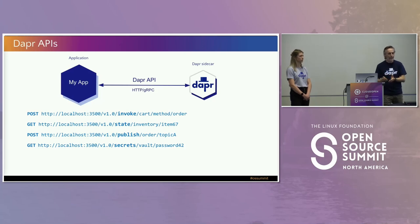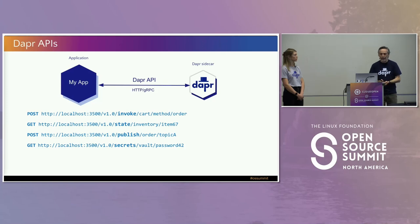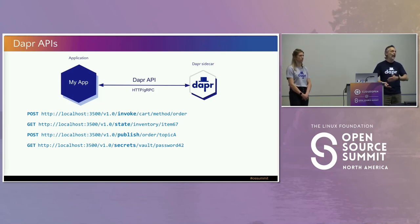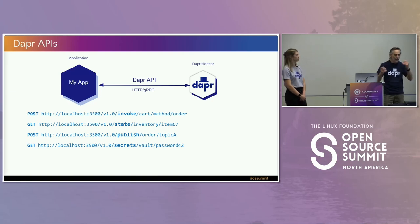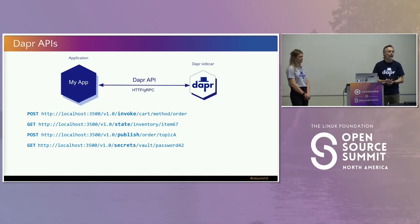You simply call an API. Say you wanted to call the order method on the cart application wherever it's running — Dapr will do that for you with a simple API call that discovers where that application is, calls it, and handles retry and security on your behalf. Straightforward, easy to understand as a developer, making your code concise, consistent, and portable, independent of the platform it runs on.